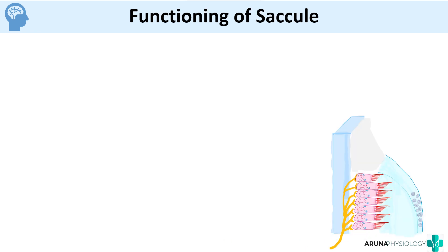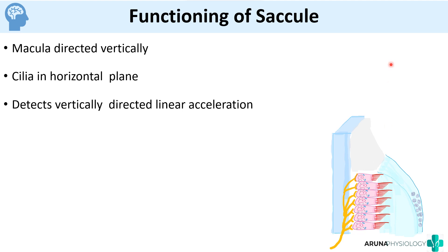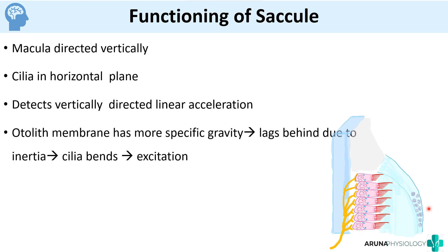In the saccule, the macula is directed vertically, which means the cilia are in the horizontal plane. This allows it to detect vertically directed linear acceleration. If we are moving up or down, there will be a change in the gelatinous otolith layer, causing depolarization or hyperpolarization depending on direction. The otolith membrane, having greater specific gravity, lags behind due to inertia — if moving upward, the otolith membrane remains downward — causing movement of the hair cells and depolarization. This is how the macula of utricle and saccule work.